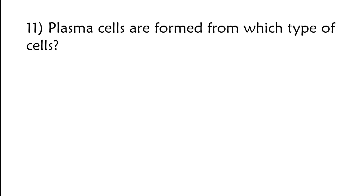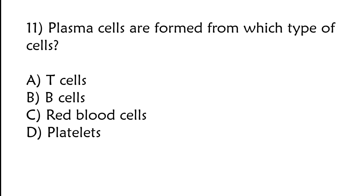Plasma cells are formed from which type of cells? T cells, B cells, red blood cells, platelets. The correct answer is option B, B cells.